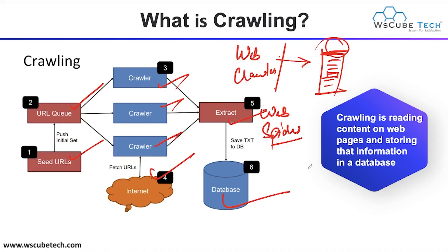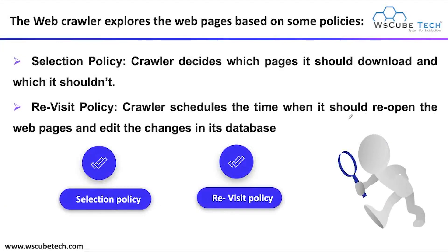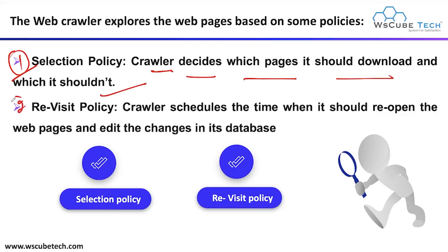The web crawler explores web pages based on some policies. First we have the selection policy: the crawler decides which pages it should download and which it should skip. Next we have the revisit policy: the crawler schedules the time when it should reopen the web page and add any changes to its database.